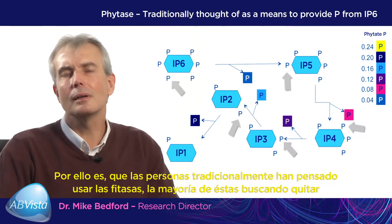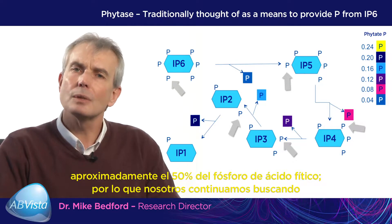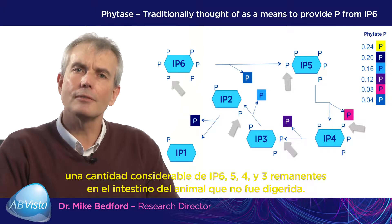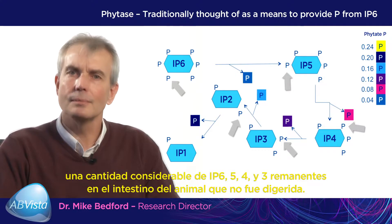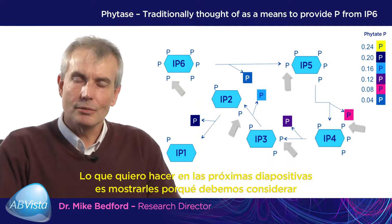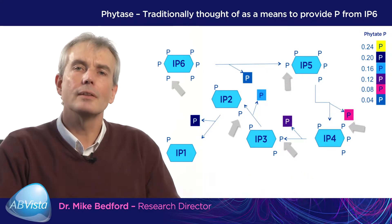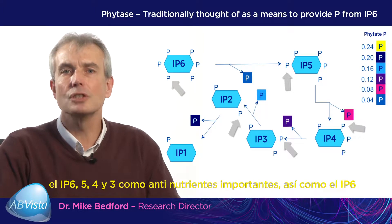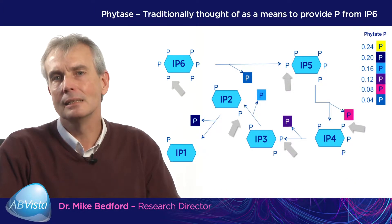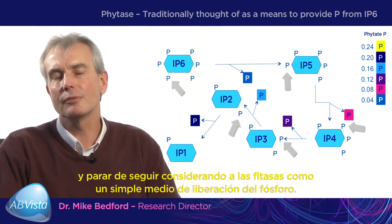Most people are looking at removing approximately 50% of the phosphorus from phytic acid, so there is still a considerable amount of IP6, IP5, IP4, and IP3 left in the gut of the animal undigested. What I want to do over the next few visuals is show you why I think we've got to consider IP5, IP4, and IP3 as being significant anti-nutrients just as much as IP6, and to stop considering phytases as simply a means of delivering phosphorus.